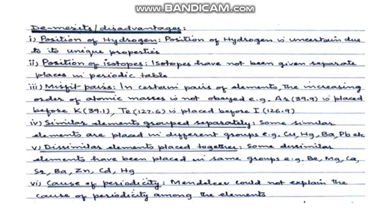Demerits kaun kaun se hain? Agar in mein se four points yaad kar lo aur apne words mein likh lo, kaafi hoga. Pehla demerit: position of hydrogen satisfactory nahi hai, kyunke uski unique properties hain jo more than one group se milti hain. Doosra: position of isotopes ka masla tha — logon ne aitraz kiya ki protium to rakha hai, lekin deuterium aur tritium ka kya? Iska jawab nahi de saka — bada aadmi tha lekin yahan lajawaab hua.